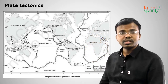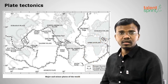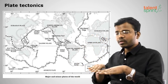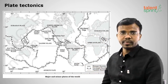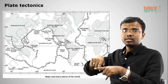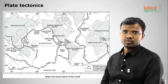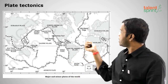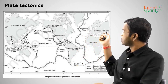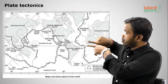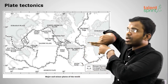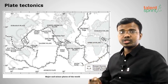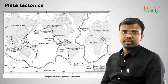Minor plates include the Cocos plate (between Central America and the Pacific), Nasca plate (between South America and the Pacific), Arabian plate, Philippine plate, Caroline plate, and Fiji plate. On the diagram you can see all major and minor plates. Nepal is at the juncture of the Eurasian and Indian plates, making it more prone to earthquakes.